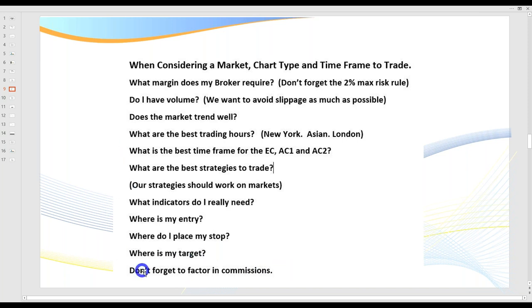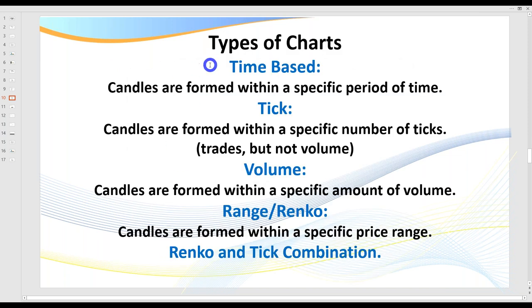The other key points are: where's my entry, where do I place my stop, where's my target, and don't forget to factor in commissions. These are the considerations we have when selecting a market to trade. Today's market is going to be CL — black gold — which is $10 a tick. There are lots of different types of charts: you might be a time-based trader, tick, volume, range Renko, or a Renko and tick combination, which is what I prefer to trade. Whatever type of chart you use, the same principles and setups apply.